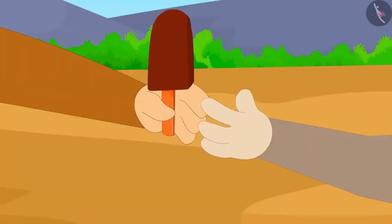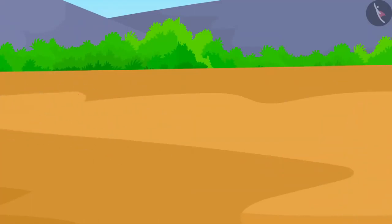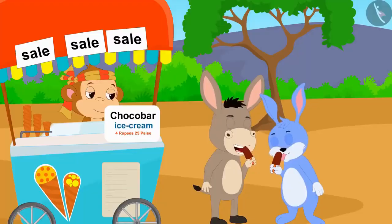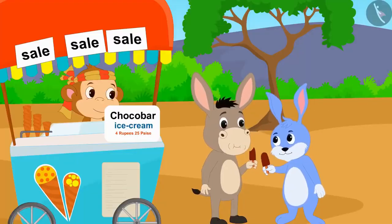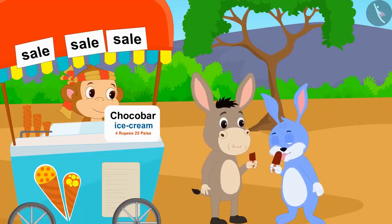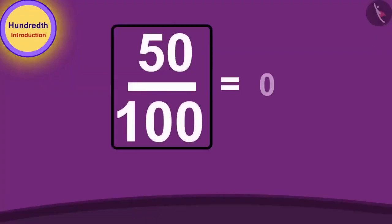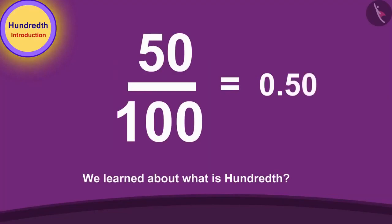Bunny and Bhoola bought one Chocobar ice cream each from Babban and happily returned home eating ice cream. Children, in this video we learned about what is hundredths. In the next video, we will learn more about it through some interesting examples.